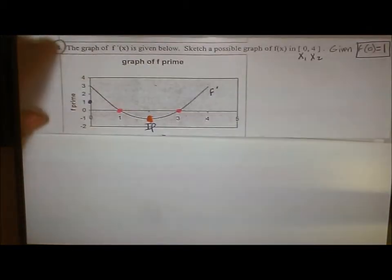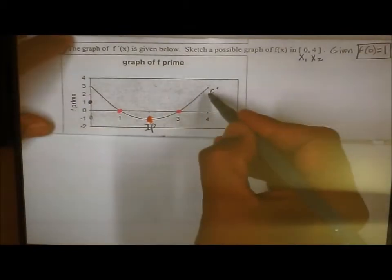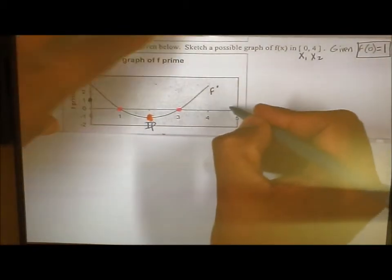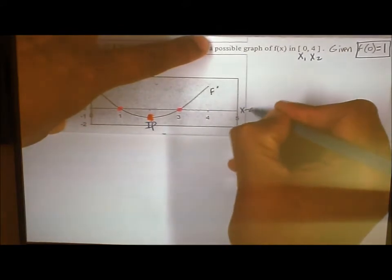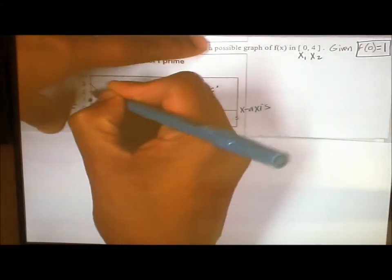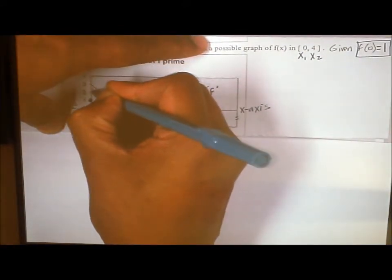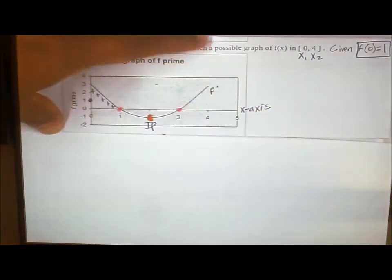Okay, the next thing we want to do is we want to make a sign chart for f prime using the curve itself and looking at the x-axis. So if I'm above the x-axis, f prime is positive.